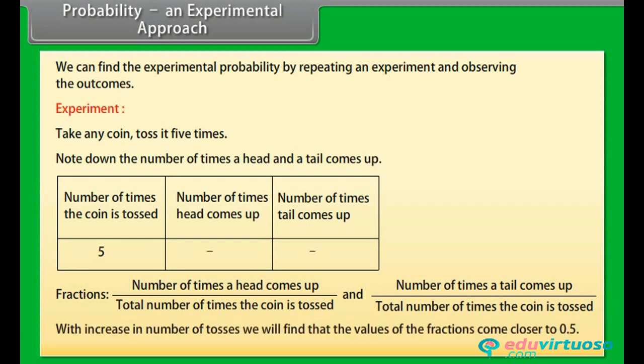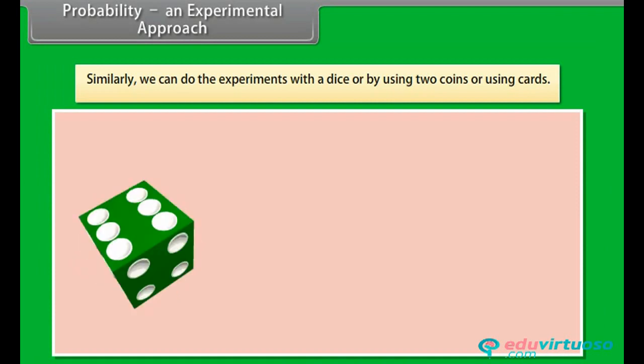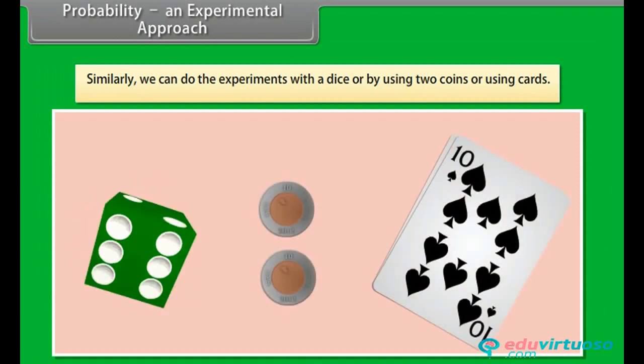As we increase the number of tosses, we will find that the values of the fractions come closer to 0.5. Similarly, we can do the experiments with a dice, or by using two coins or using cards.